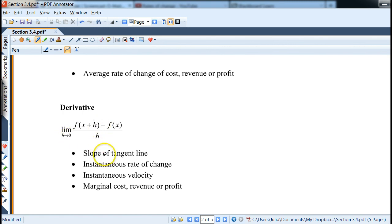So derivative represents the slope of tangent line at a point. It also represents instantaneous rate of change, instantaneous velocity, for example, or we've seen the word marginal cost, revenue, or profit already, or how much those functions are increasing.